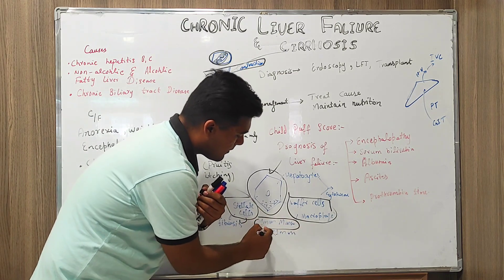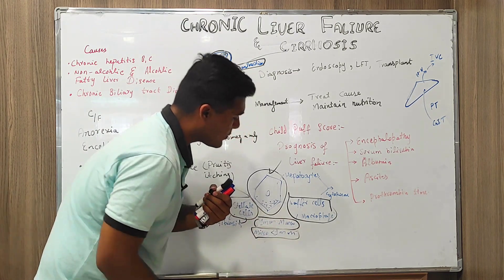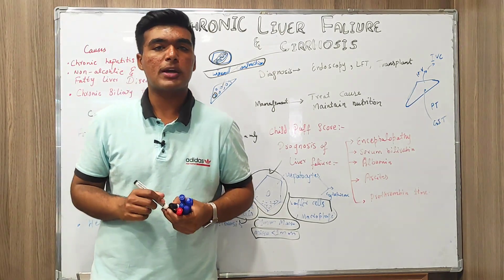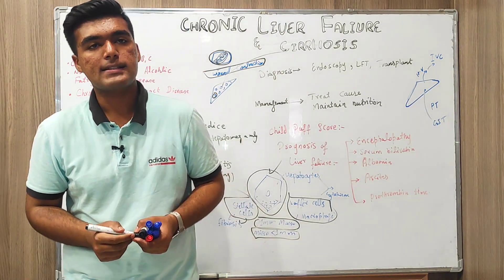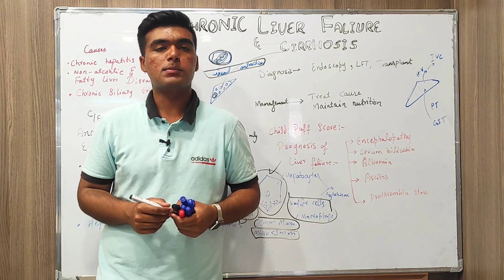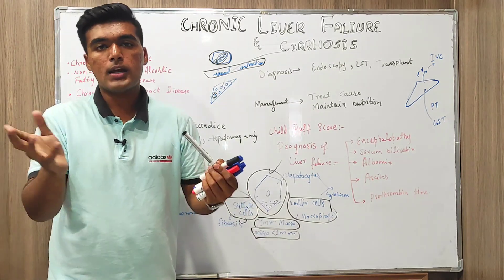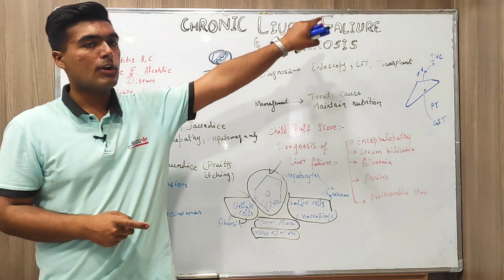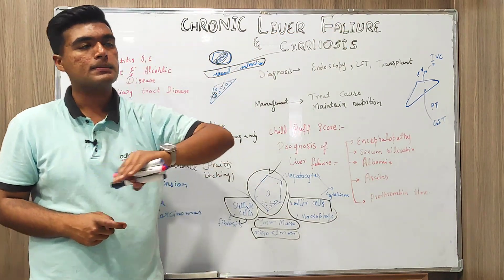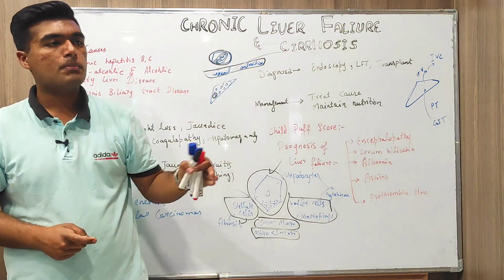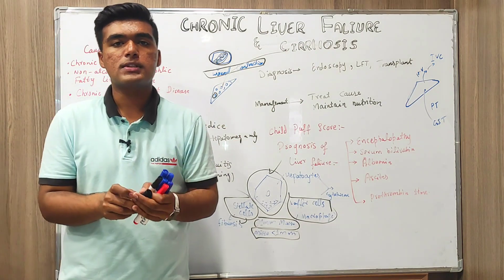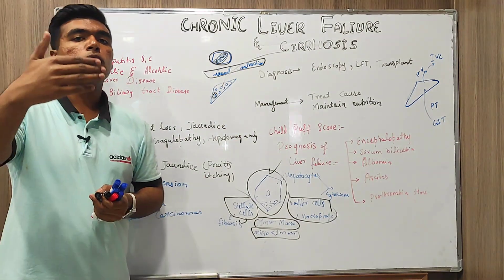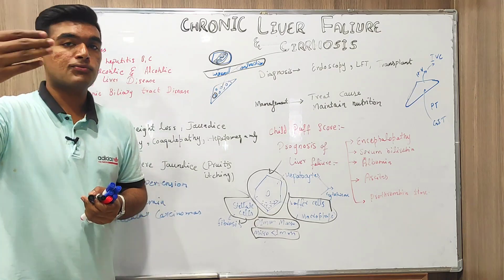When we talk about micro and macro nodules: a nodule greater than one millimeter in diameter is a macronodule, and a nodule lesser than one millimeter in diameter is a micronodule. So in quick overview we discussed what chronic liver failure is, how cirrhosis develops, and how the phenomenon of fibrosis and nodule formation takes place.